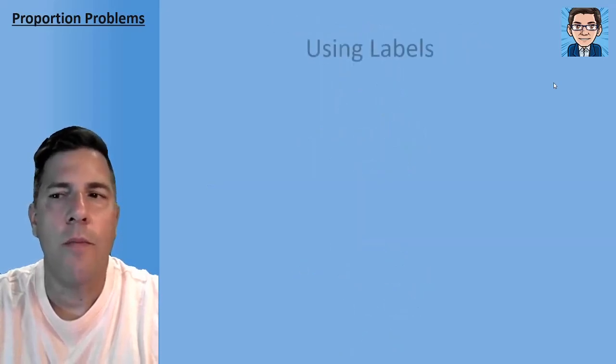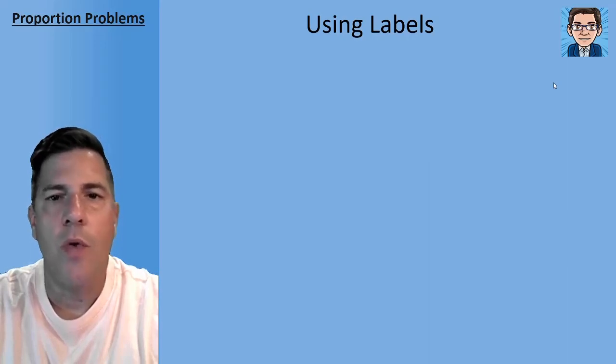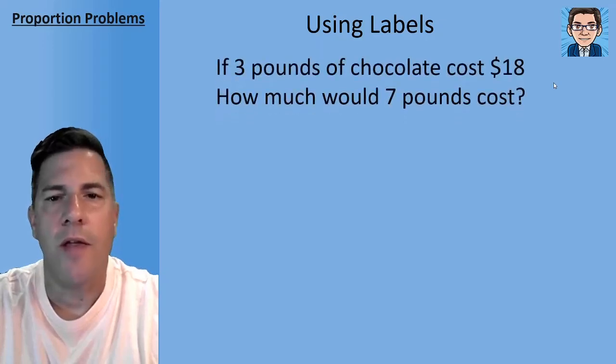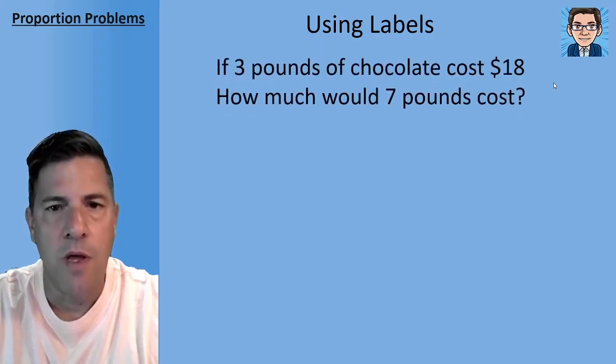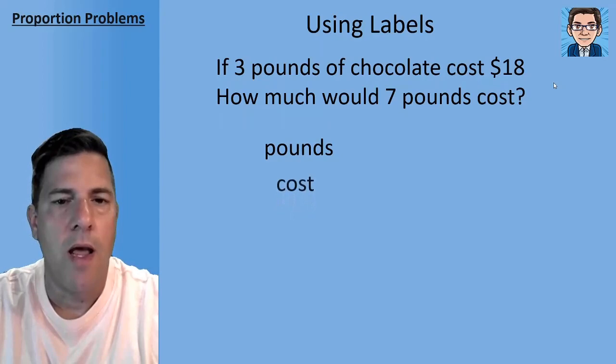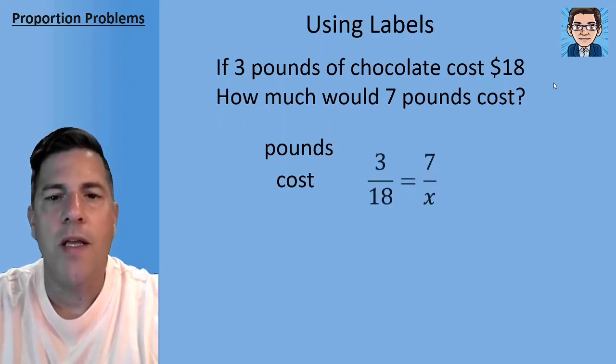Now when we're looking at word problems, it helps to use labels so that we know that we get the right thing in the numerator and the right thing in the denominator. So in this simple example here, we've got three pounds of chocolate that costs $18. How much would it cost for seven pounds? So I'm going to go ahead and put the pounds in the numerator and the cost in the denominator. Now it doesn't matter which way you do it, but it does matter that you're consistent.